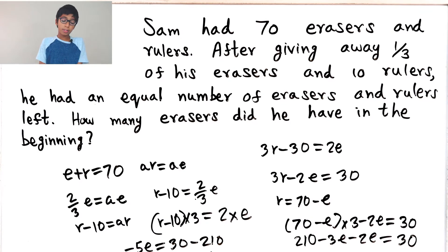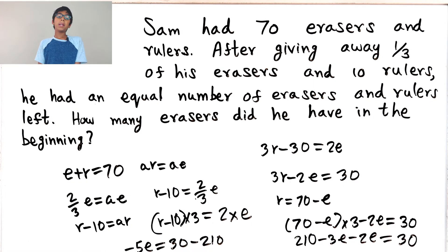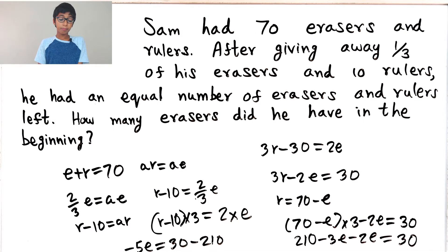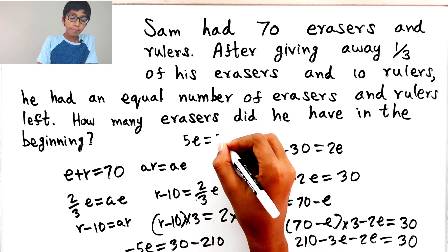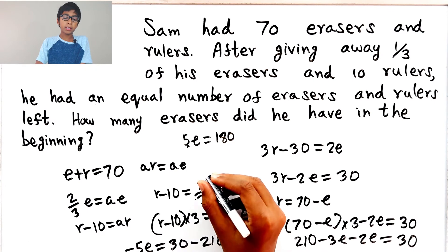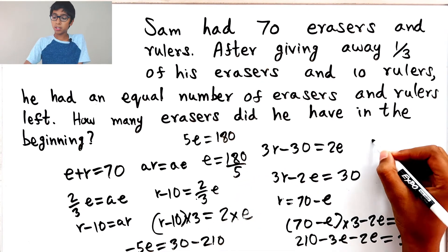So combining the E terms: minus five E. And moving 210 over gives minus five E equals 30 minus 210, which is minus 180. So minus five E equals minus 180. We can change both to positive: five E equals 180. Moving the 5 over gives E equals 180 divided by 5, and 180 divided by 5 is 36. So E equals 36.